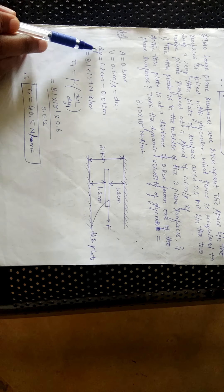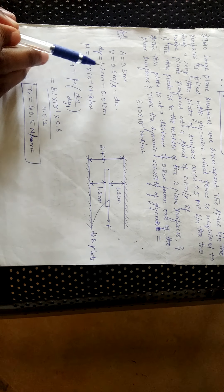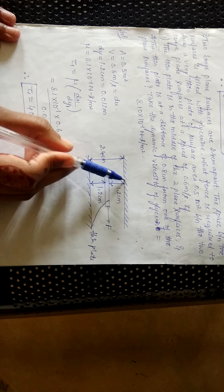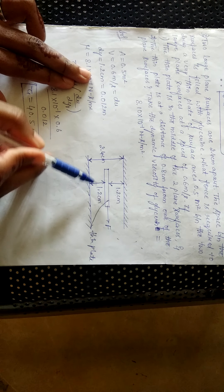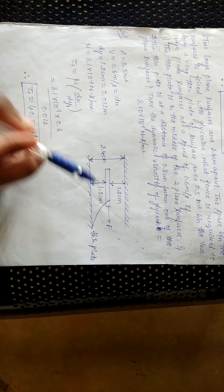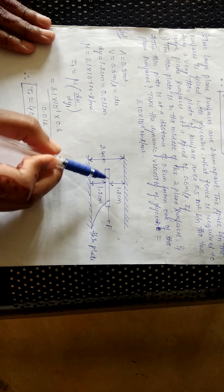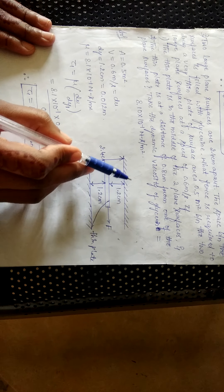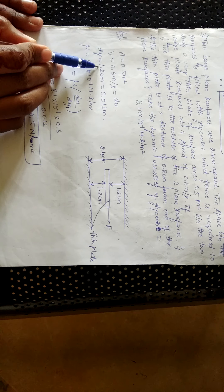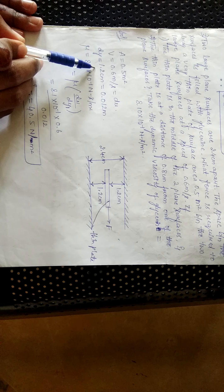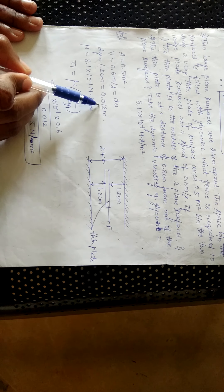dy is the thickness of the glycerin from any one side of the plane surface. If you consider the top thickness, the value is 1.2 cm; or you can consider the bottom thickness as 1.2 cm. We are finding the force with respect to any one plane surface, so dy = 1.2 cm. Since area and velocity are in meters, we convert: dy₁ = 1.2 cm ÷ 100 = 0.012 m.